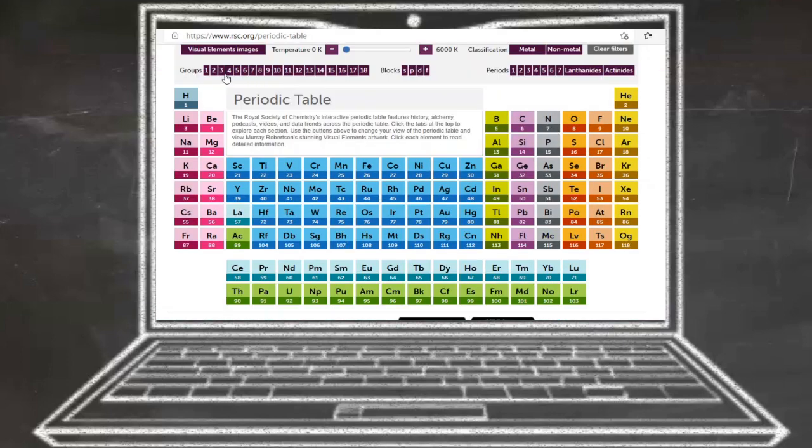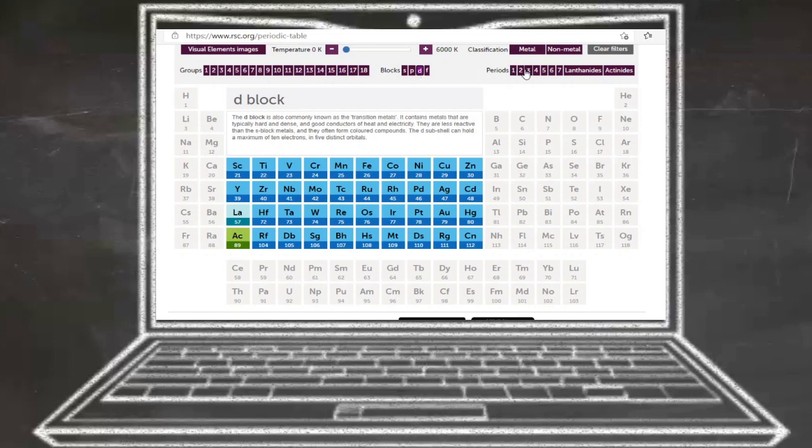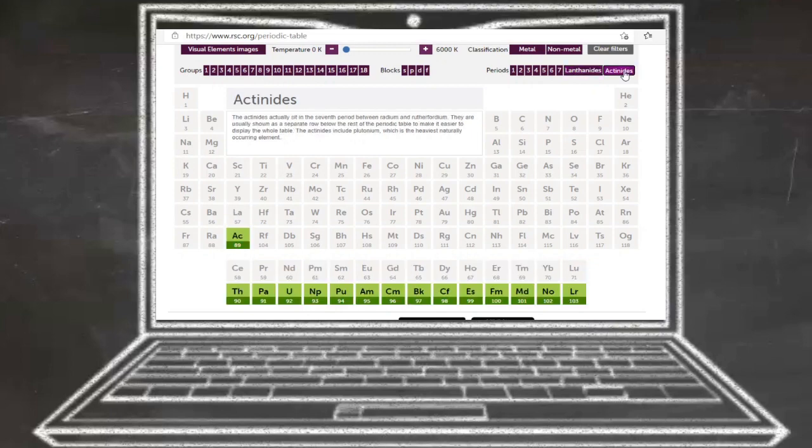You can sort the table by group, such as group 4 or group 11, by block, such as D-block, by periods, such as period 3 here, or isolate the lanthanides and actinides.